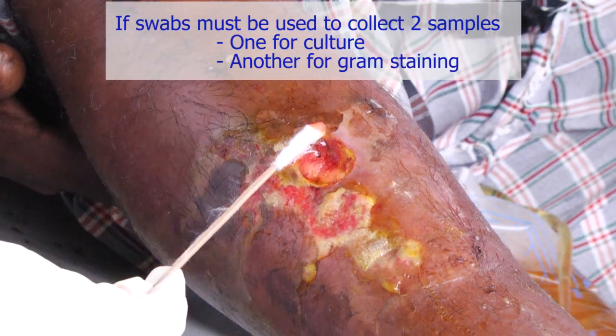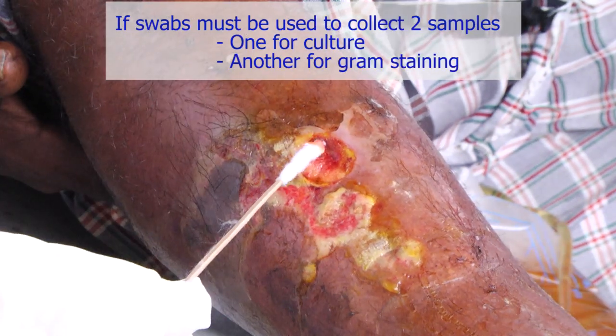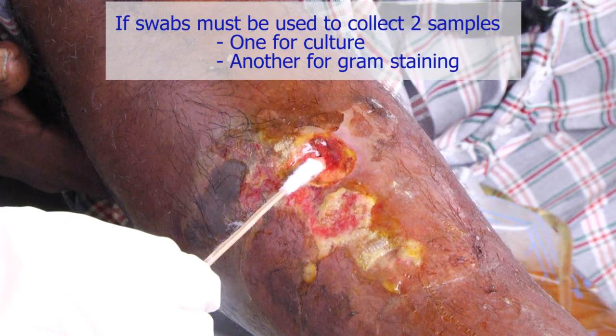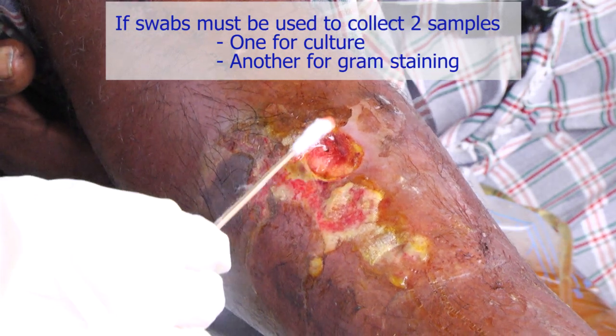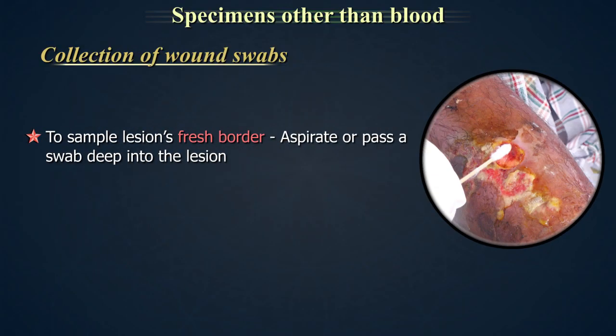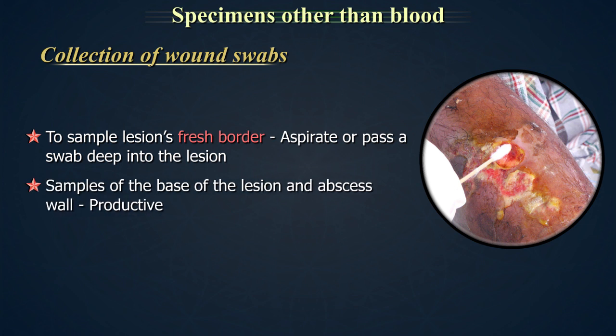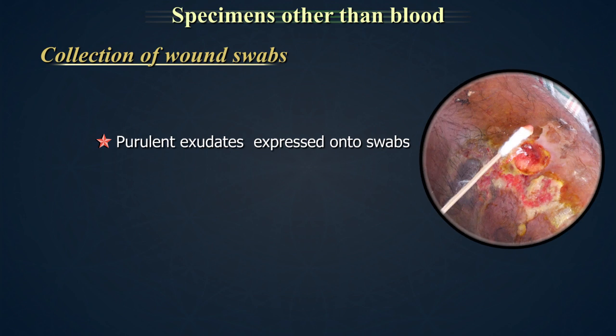If swabs must be used, collect two — one for culture and one for gram staining. Aspirate if possible, or pass a swab deep into the lesion firmly. Sample the lesion's fresh border. The samples of the base of the lesion and abscess wall are most productive. Purulent exudates must be expressed onto swabs.